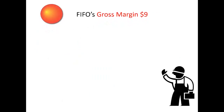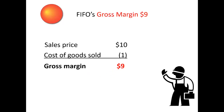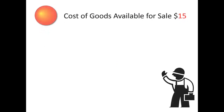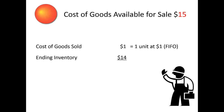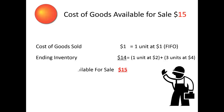FIFO's gross margin turns out to be $9: sales price of $10 less cost of goods sold of $1 equals gross margin of $9. The original cost of goods available for sale of $15 reconciles as follows: cost of goods sold of $1 (one unit at $1), plus ending inventory of $14 (one unit at $2 plus three units at $4), equals total cost of goods available for sale of $15. All goods either get expensed as cost of goods sold ($1) or remain in ending inventory ($14).